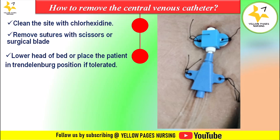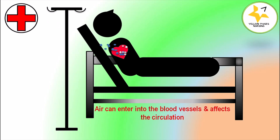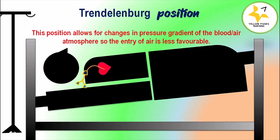The importance of the Trendelenburg position: if the patient is sitting up, the pressure gradient favors air entry into the circulation. The Trendelenburg position increases central venous pressure at the insertion site and reduces the risk of air entrainment by making air entry less favorable. If the Trendelenburg position is not possible, the patient should be placed in the supine position.